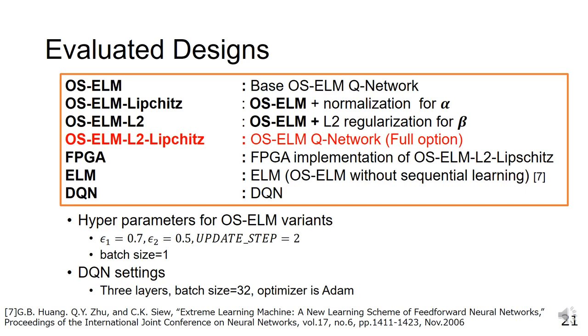Like the other designs, DQN consists of three layers, and Adam is used as an optimizer. The batch size is 1 for all the designs except DQN. In DQN, the batch size is 32.